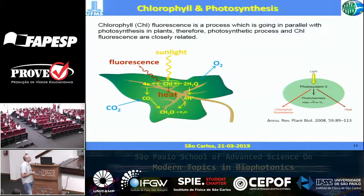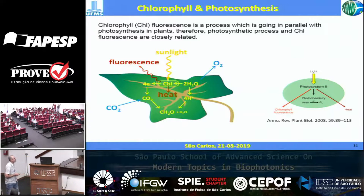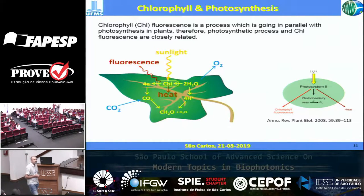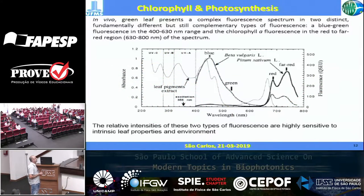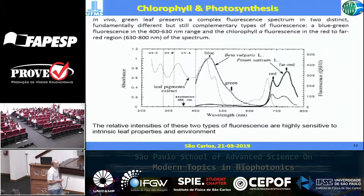During light absorption by chlorophyll, not only photosynthesis but also the photochemistry process can occur; fluorescence can occur as well, along with liberation of energy as heat to the environment. Chlorophyll fluorescence is closely related to the photosynthesis process, and you can use the fluorescence of green leaves to try to understand what happens during photosynthesis.